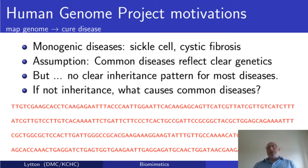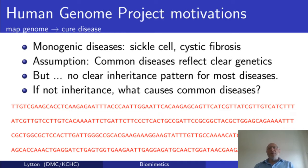The Human Genome Project perhaps does not really need saving, but in some sense it did not live up to the hyperbole assigned to it. The hope was: you map the genome, you understand disease, and you cure disease. This hope probably came from the known monogenic diseases such as sickle cell or cystic fibrosis, where you have a single gene altering a single protein, altering the entire phenome.